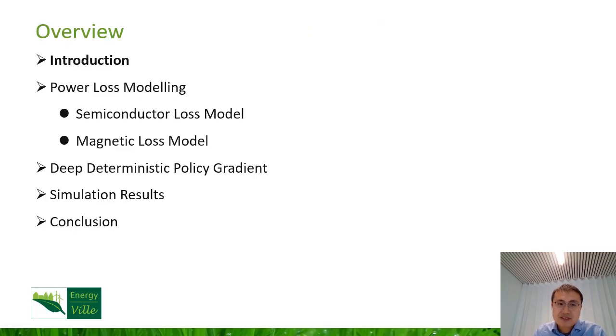In this presentation I will start with a brief introduction about design automation of power electronics, and then I will explain the detailed procedures of power loss modeling for converters, including the semiconductor loss model and magnetic loss model. After that, I will introduce the deep deterministic policy gradient algorithm, which is one of the reinforcement learning algorithms. Then I will introduce the simulation results, and the last part is the conclusion.